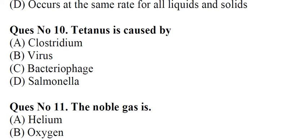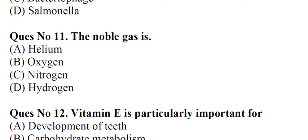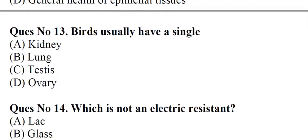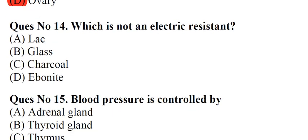Question number 10: Tetanus is caused by A. Clostridium B. Virus C. Bacteriophage D. Salmonella. Answer: A. Clostridium. Question number 11: The noble gas is A. Helium B. Oxygen C. Nitrogen D. Hydrogen. Answer: A. Helium. Question number 12: Vitamin E is particularly important for A. Development of teeth B. Carbohydrate metabolism C. Normal activity of sex glands D. General health of epithelial tissues. Answer: C. Normal activity of sex glands. Question number 13: Birds usually have a single A. Kidney B. Lung C. Testes D. Ovary. Answer: D. Ovary.